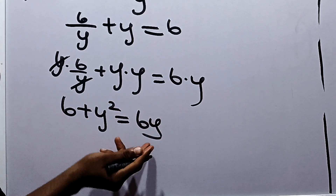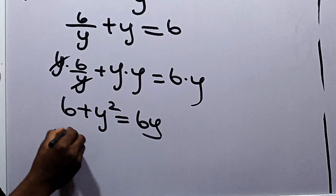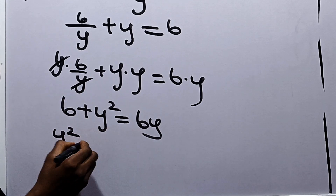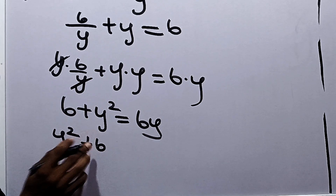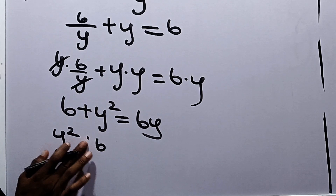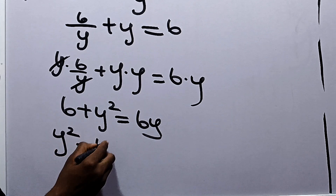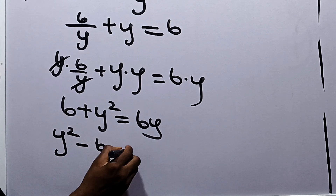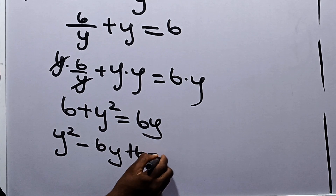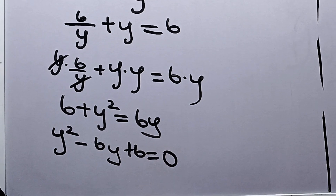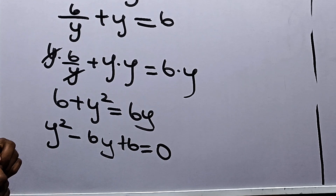From here, we can now write this. Pushing this over, we have y squared, and 6y becomes minus 6y plus 6 is equal to 0. This is the quadratic equation that we have.